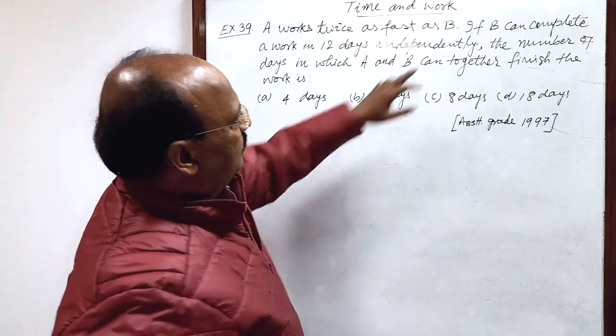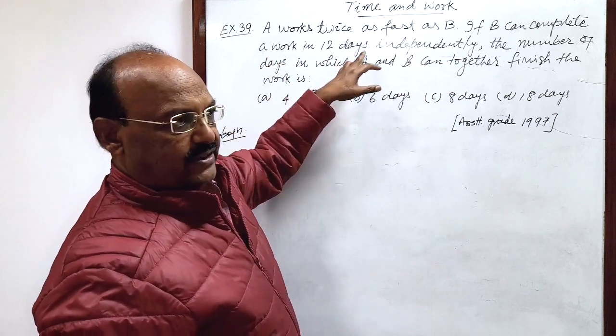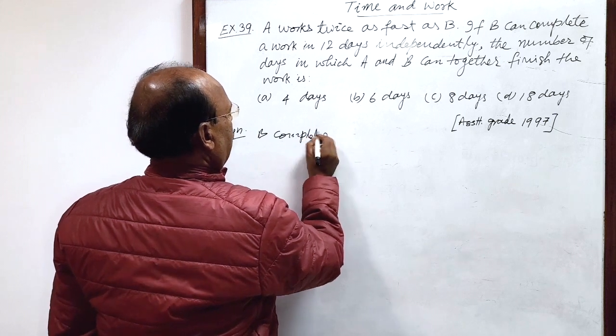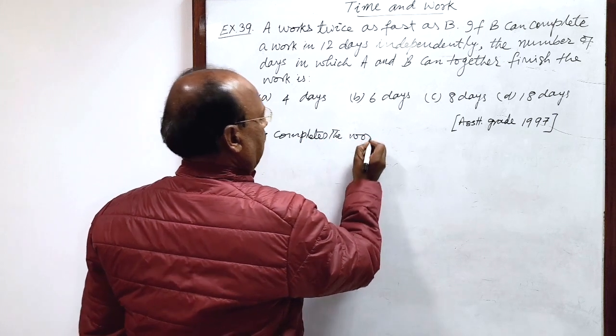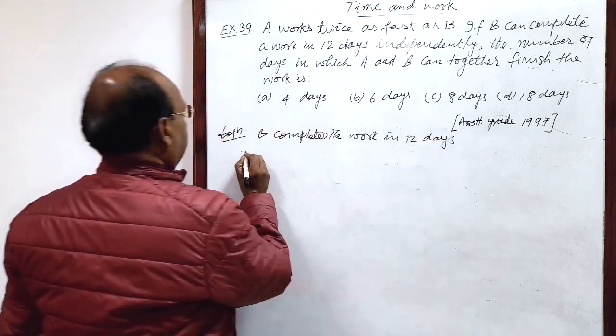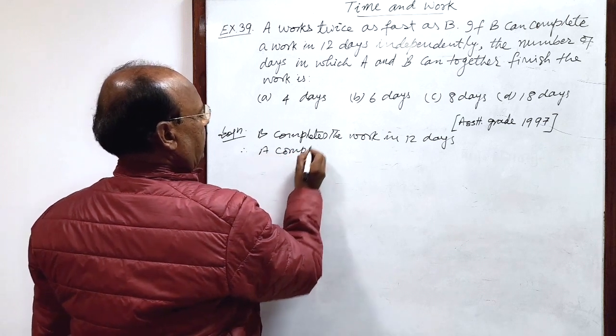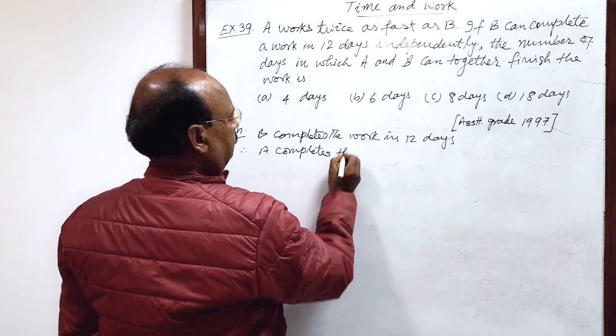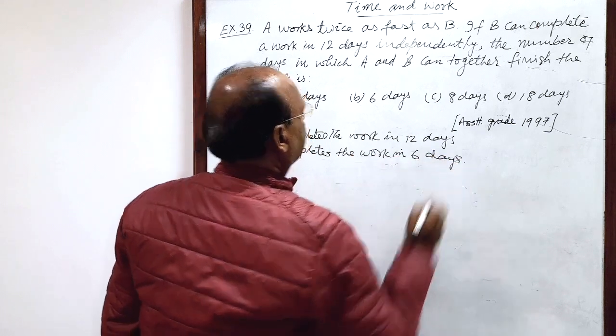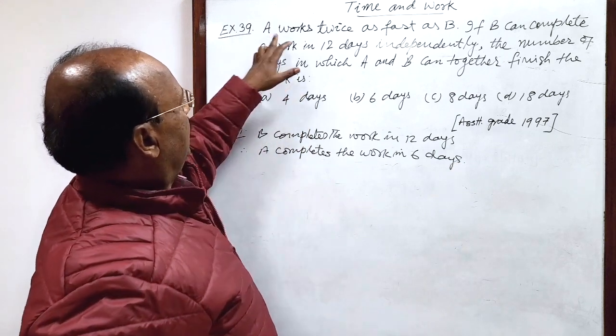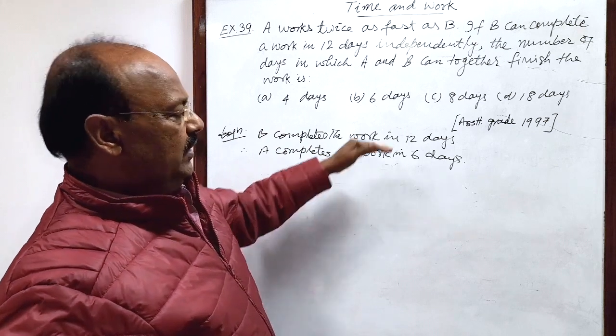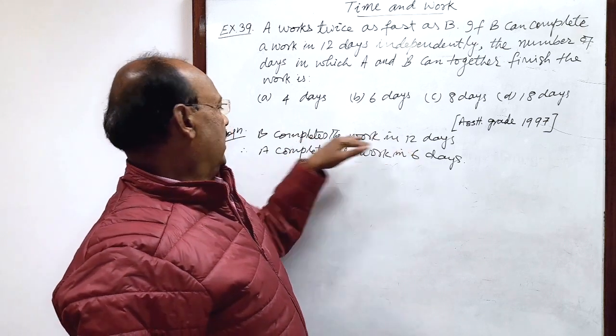Here given that B can complete a work in 12 days, and therefore A completes the work in 6 days. How? Because A works twice as fast as B, so the number of days required by A will be half that required by B.